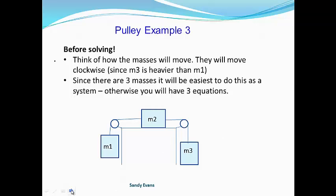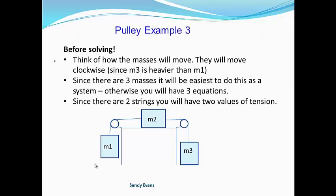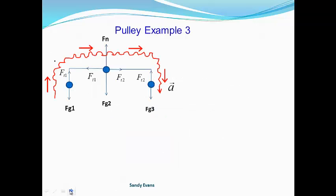If you separate out your free bodies and do it that way, you're going to have three equations. So we're going to take the easy way out and analyze as a system. Since there are two different strings, you are going to have two values for your tension. Here's our free body diagram of the system. Notice that we've got our acceleration moving clockwise, and that will denote our positive direction.